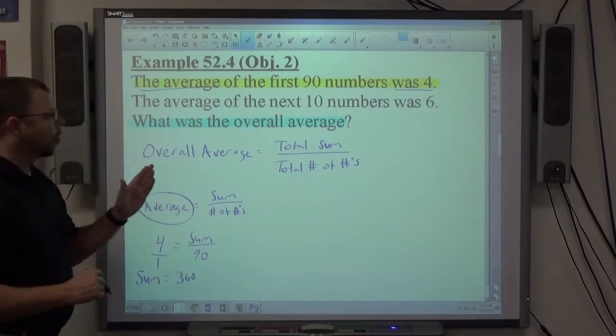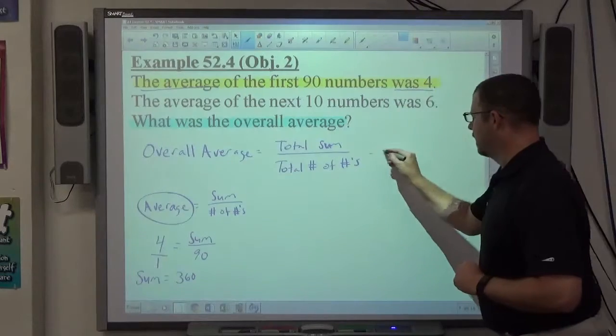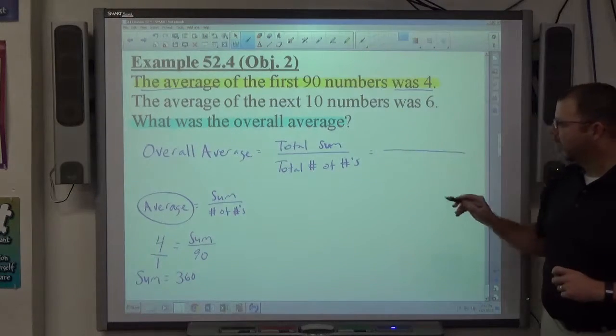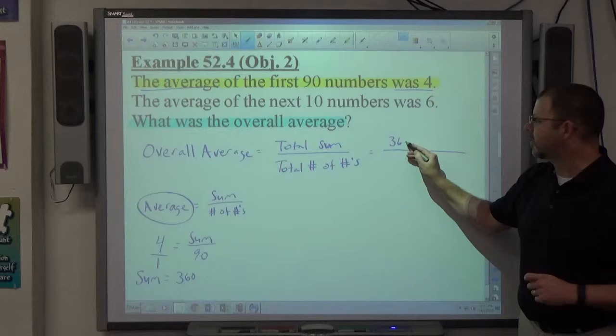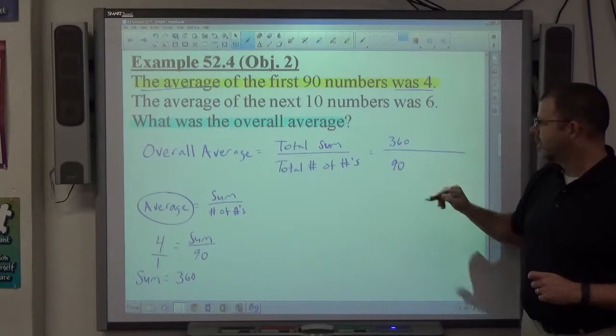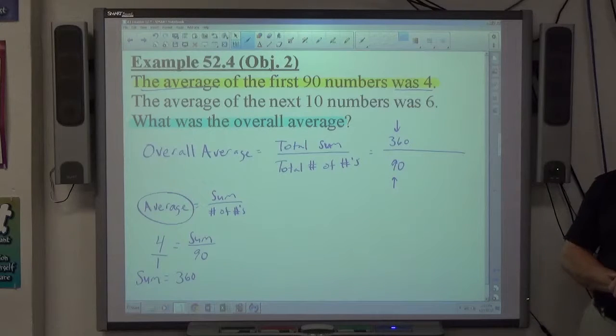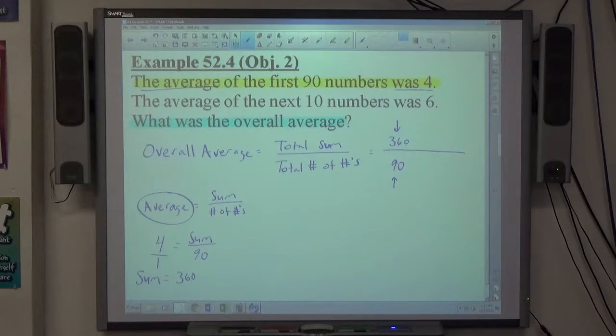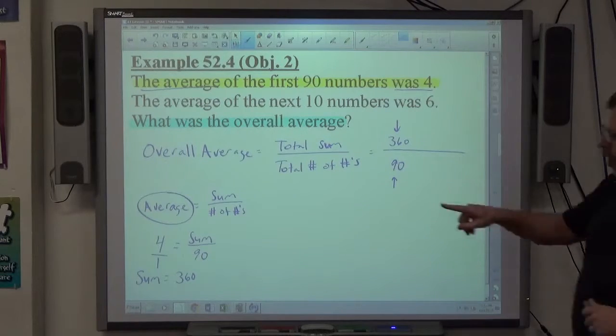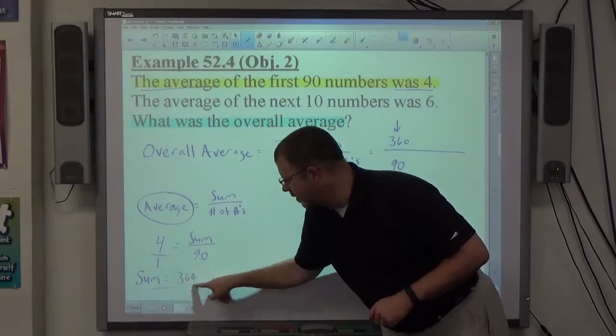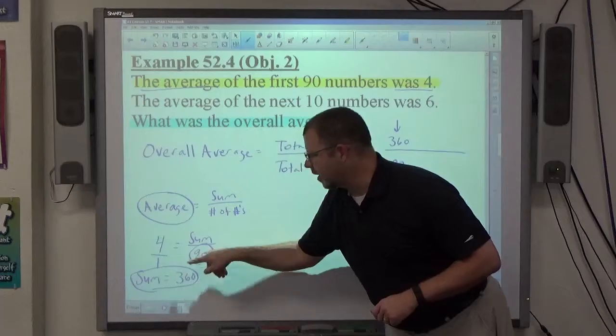So looking at the overall average, in the context of this problem, the sum of the first 90 numbers was 360. So 360 is the sum, and 90 is how many numbers there were. The number I'm not using there is the average. I don't care about the average. I care about what the sum was and how many numbers were there.